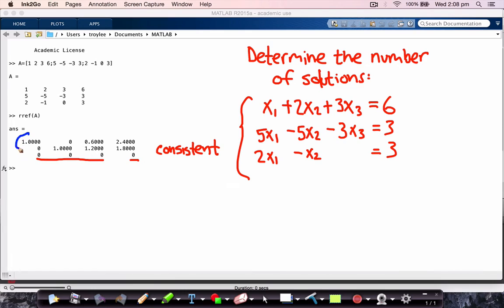So next we look at the leading entries of the reduced row echelon form. So it has two leading entries in the first row and the second row.